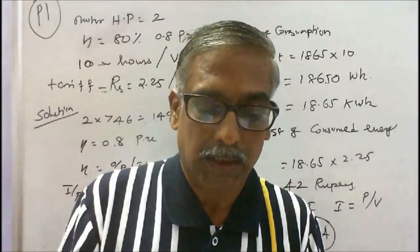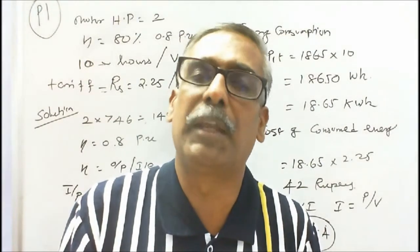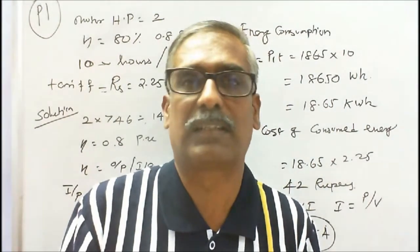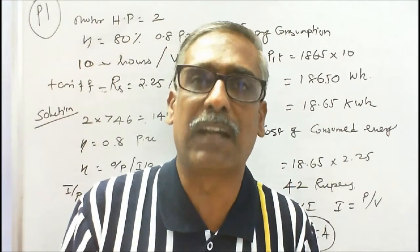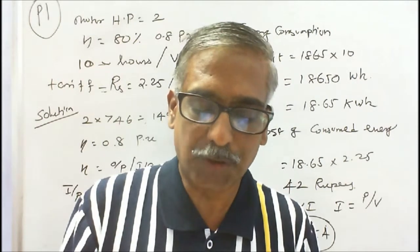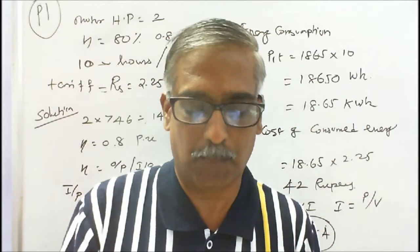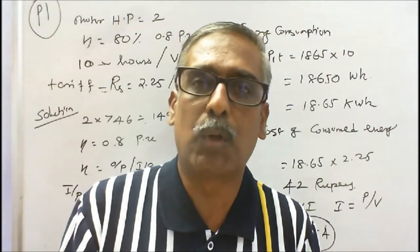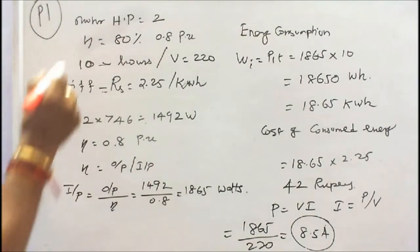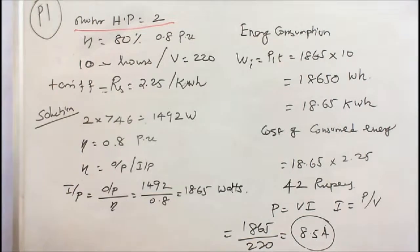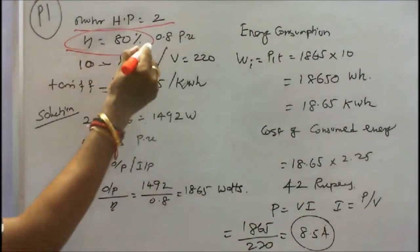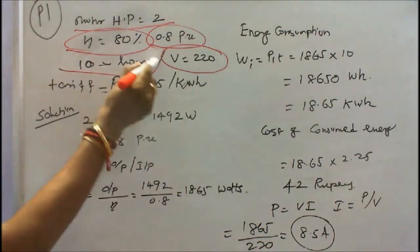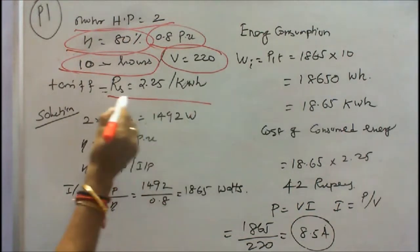First problem: A 2 HP electric motor has an efficiency of 80%. Find A: its electric power input in watts. B: its energy consumption if it runs continuously for 10 hours. C: the cost of energy consumption if the cost per unit is Rs. 2.25. And D: the current carrying capacity of its connecting wire if it is operating from a 220V DC supply.